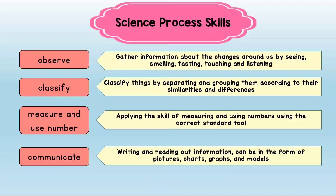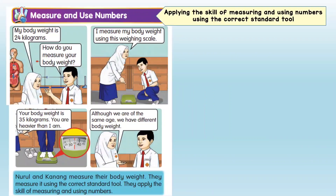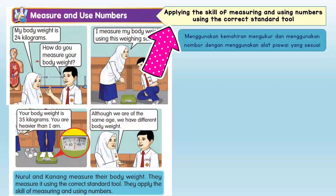Let's recall: there are four science process skills, which are observe, classify, measure and use numbers, and communicate. As for today, we're going to focus on measure and use numbers. Measure and use numbers means applying the skill of measuring and using numbers using the correct standard tools.